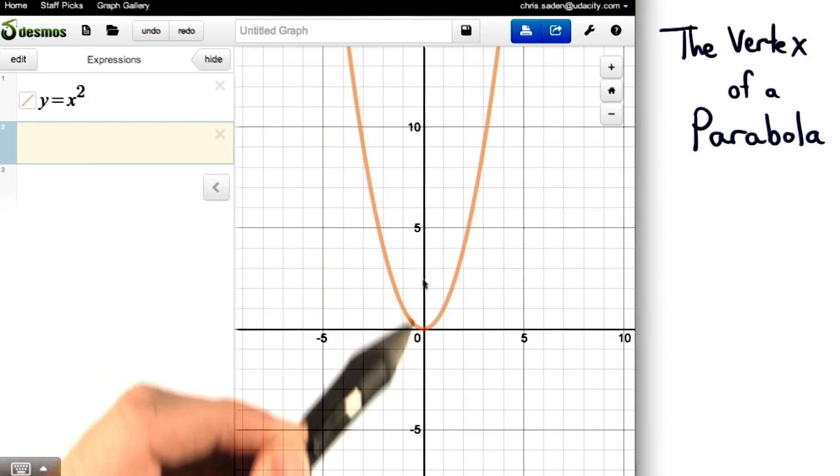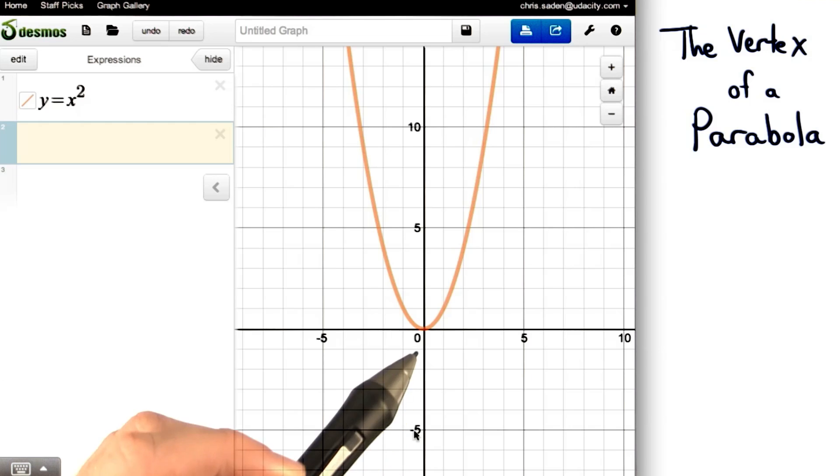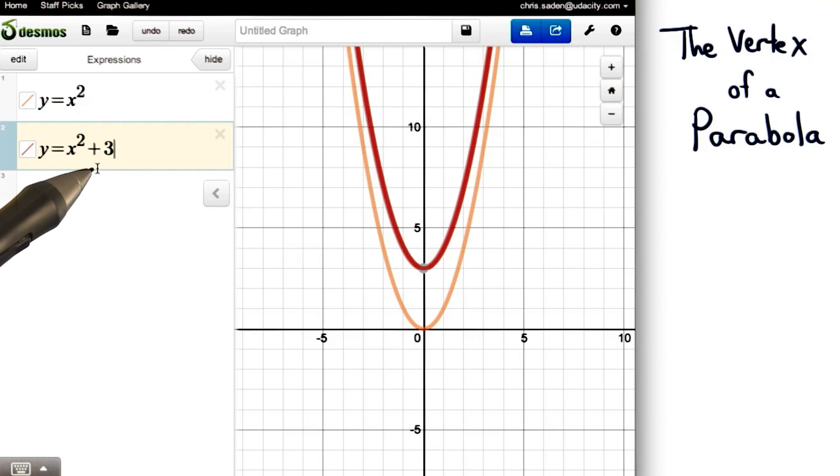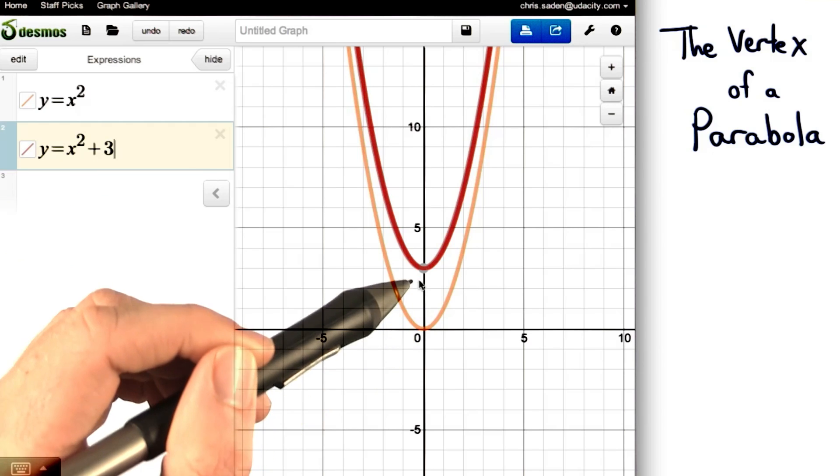Now, we've seen shifting the parabola up and down. Well, we can also see a parabola shifted left and right. So, we know by adding 3 on the end, we could shift the parabola up 3 units.